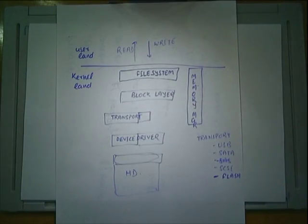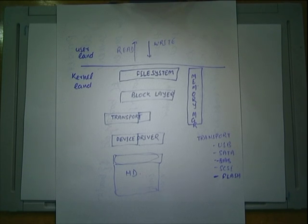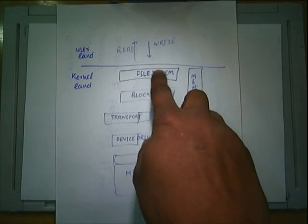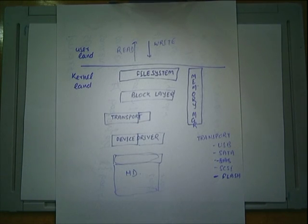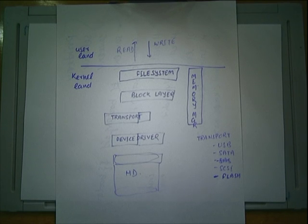It transfers data from user land to the kernel. You allocate memory in user land, and kernel land has different memory. You write your data into the user buffer, transfer it to the kernel buffer. The filesystem takes that kernel buffer and gives it to the block layer.